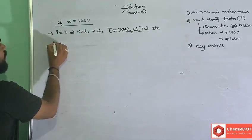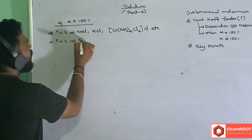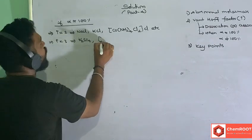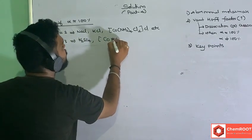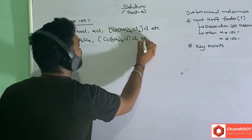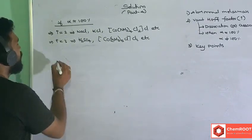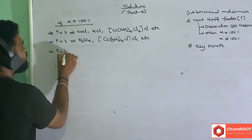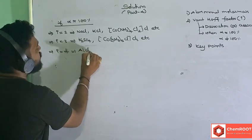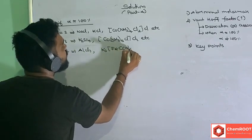When i = 3, it gives 3 particles at 100% dissociation — for example K₂SO₄ gives 2K⁺ ions and 1 SO₄²⁻ ion, or a complex like [Co(NH₃)₅Cl]Cl₂. It will give 3 ions: 2 counter ions and 1 complex ion. And i = 4 for compounds like AlCl₃ or K₃[FeCl₆], or complexes like [Co(NH₃)₆]Cl₃.